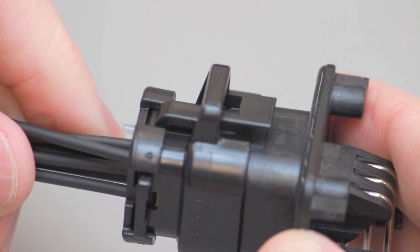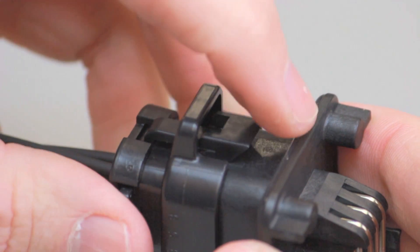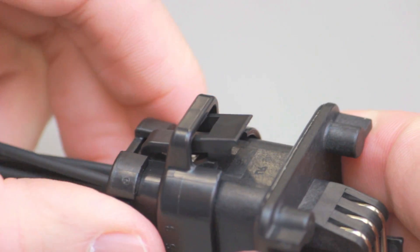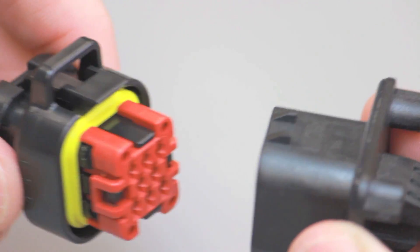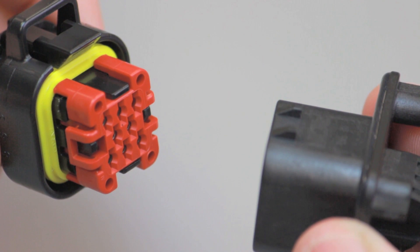AmpSeal Connector Unmating. To unmate AmpSeal connectors, lift the locking latch on the outside of the receptacle contact housing while pulling it apart from the PCB header.